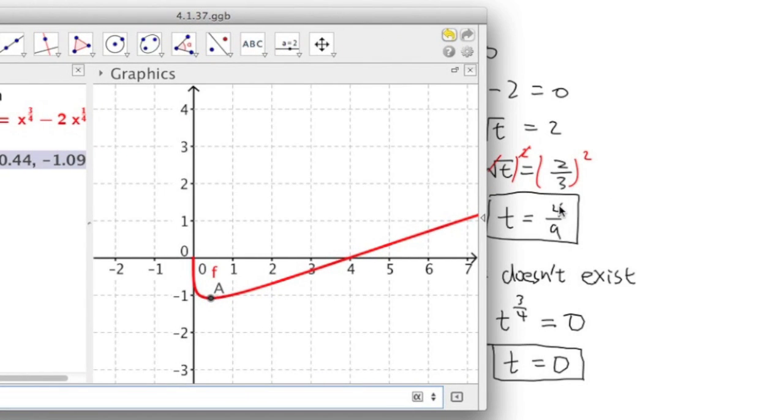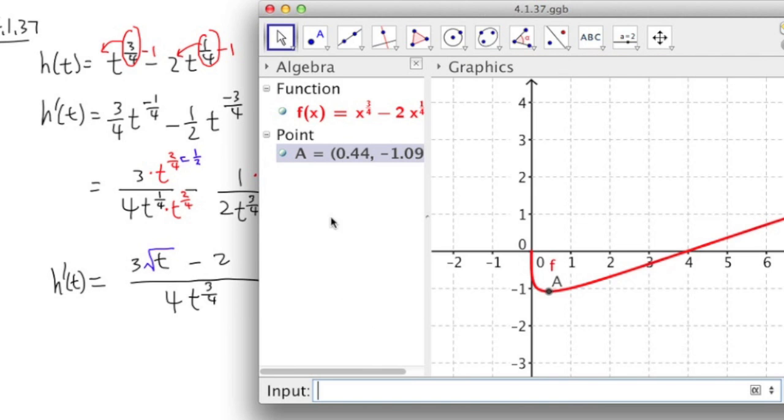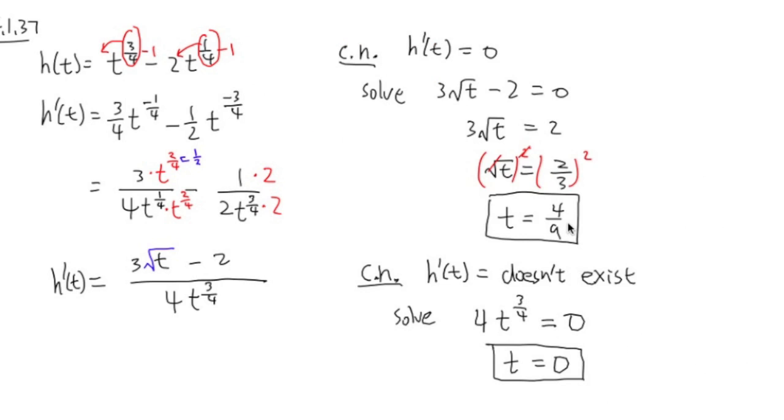So when the t value is 4 over 9, we will get our minimum value. So this is what I would like to show you. So this is the graph of the function. And that's the minimum point. And once again, you consider 4 over 9 and 0 as the critical numbers.